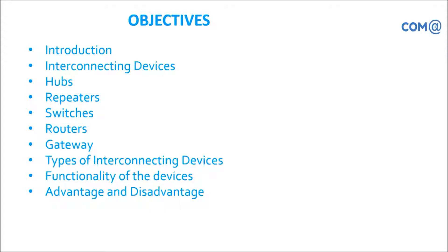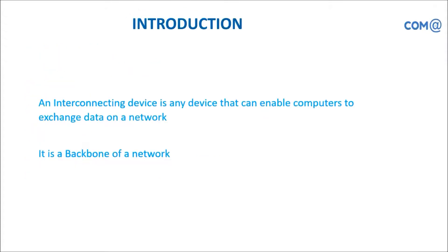Over the past, what kind of devices we used and now with the current technology trending, what devices we are employing with different types of offices based on their budget, based on their environment, based on their design — we'll discuss all those things in this session. An interconnecting device is any device that can enable computers to exchange data on a network, whether it's a hub, switch, or any physical device used for connecting computers, in a small LAN or enterprise wide area network. Definitely we need connectivity devices.